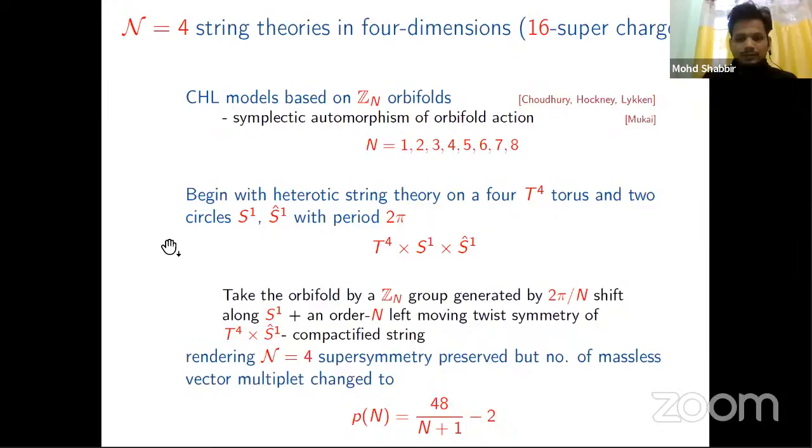Begin with heterotic string theory on T^4 × S^1 × S^1 with period 2π. Take the orbifold by a Z_N group generated by 2π/N shift along S^1 also in order N left-moving U(1) symmetry of T^4 × S^1 × S^1 at the conformal field theory level. This N is supposed to preserve N=4, but the number of massless vector multiplets changes to the number given by 48/N + 2 or 48/N - 2.